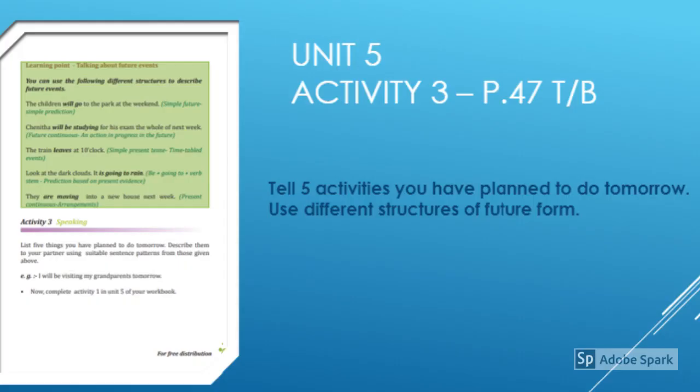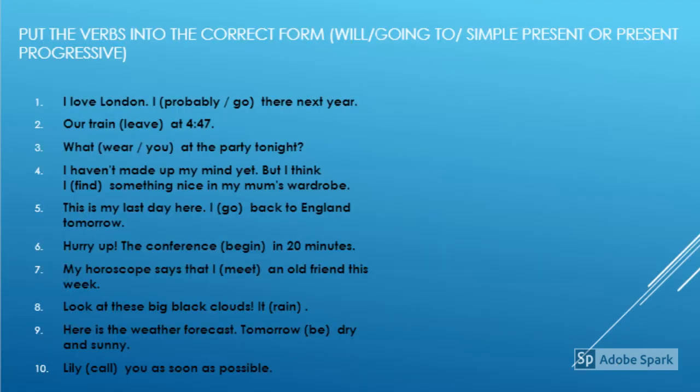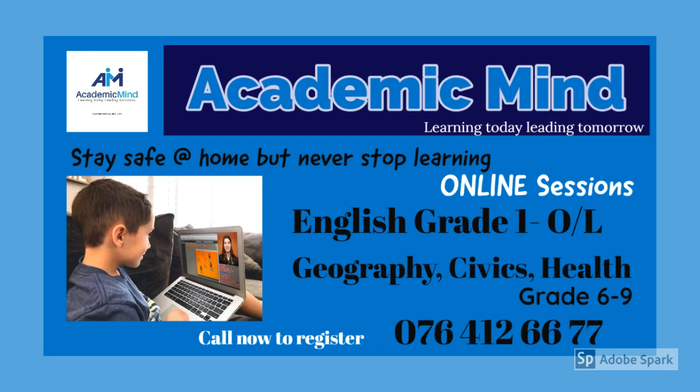Go through activity 3 in unit 5 on page number 47 in your pupils' textbook. Discuss about 5 activities you have planned to do tomorrow. Use different structures of future form to talk about those activities. Now try to do the activity given — put the verbs into the correct form using different structures of future form. In this video lesson, you learned how to express future activities using different future tenses. Thank you for joining Academic Mind. Enjoy learning with us. Have a good day.